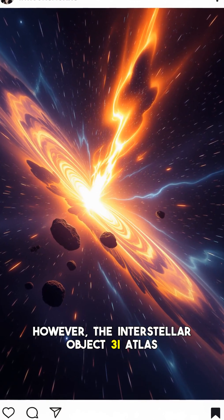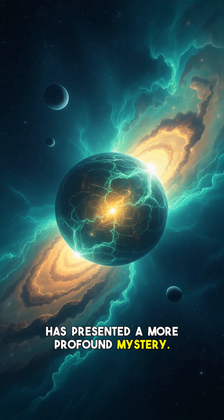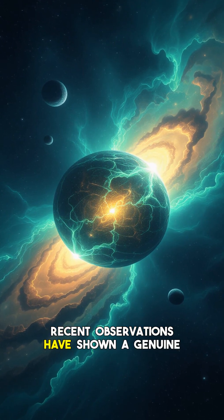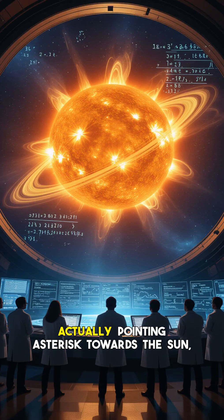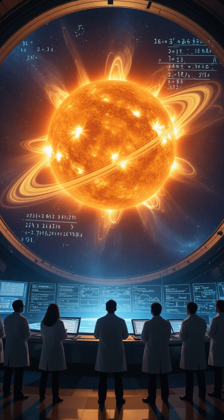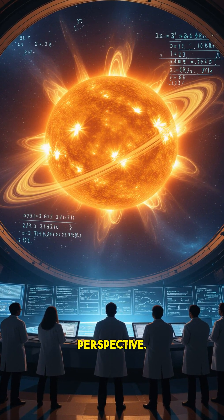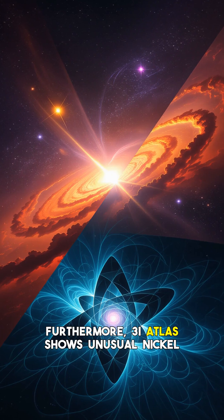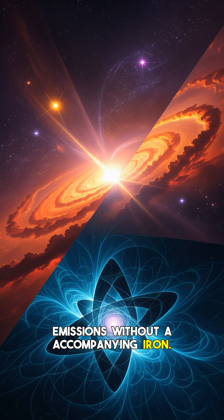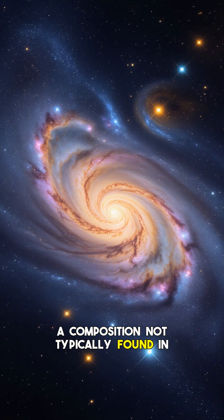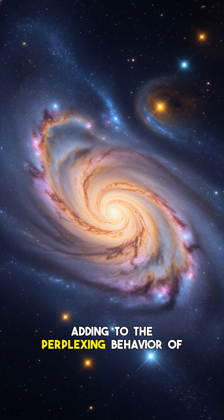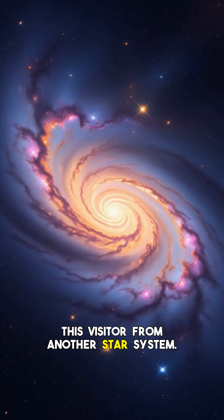However, the interstellar object 3I Atlas has presented a more profound mystery. Recent observations have shown a genuine jet of material actually pointing towards the sun, an anomaly that goes beyond mere perspective. Furthermore, 3I Atlas shows unusual nickel emissions without accompanying iron, a composition not typically found in natural comets, adding to the perplexing behavior of this visitor from another star system.